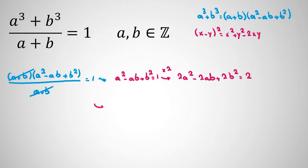Next step, instead of 2A squared, I write it as A squared plus A squared minus 2AB. And again, instead of B squared, I write B squared plus B squared equals 2.